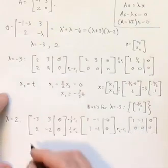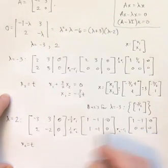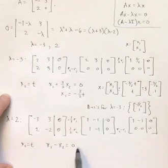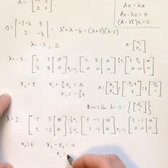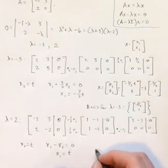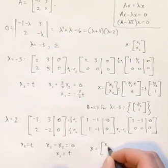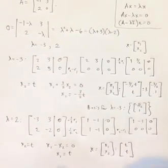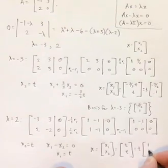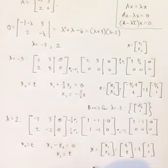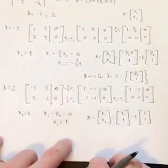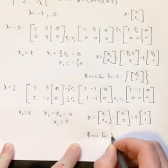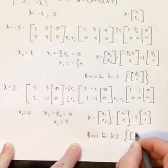X2 is free, so we'll just say x2 is t. And then this top equation becomes x1 minus x2 is 0. Or in other words, x1 equals x2. And since x2 was t, x1 has to also be t. So our solution x, which again is x1, x2, is just t, t. If I factor the t out, I'm left with a vector 1, 1. In this particular problem, the basis for lambda equals 2 is just the vector 1, 1.